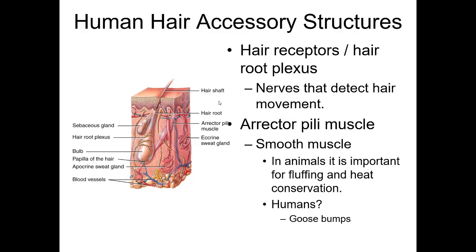The accessory structures of the hair include the hair root plexus — a series of nerves hugging or covering the hair bulb externally. This is why you feel pain when a hair is plucked. You also have the erector pili or piloerector muscle, which allows the hair to stand upright. In animals, this gives a fluffy appearance, helps with insulation, makes the animal appear bigger and more intimidating to a predator, and helps the animal survive. In human beings, however, goosebumps have no real significance.